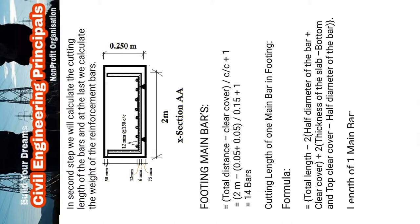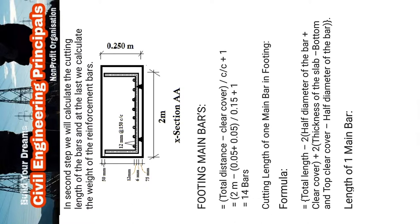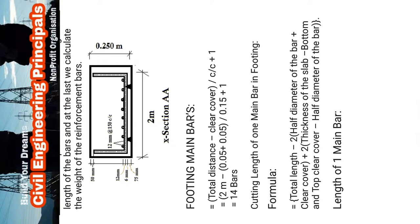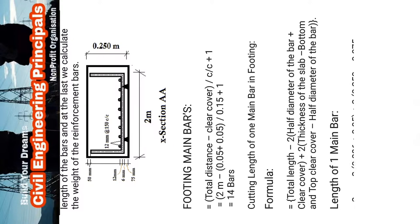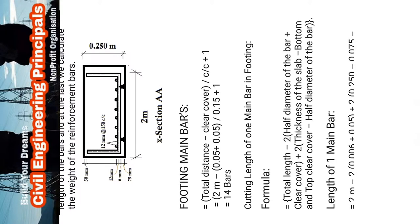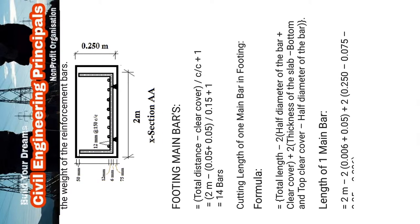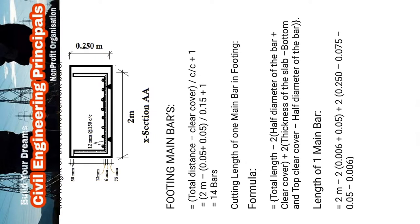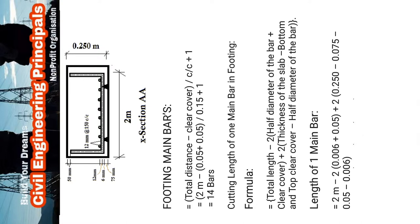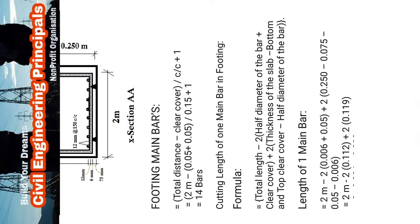Total length of footing main bars formula: Total length = (Total length minus concrete cover) divided by center-to-center spacing, plus one. Solving the equation, we find 14 bars.